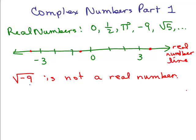But square root of negative 9 is not a real number. Square root of negative 9 is not on the real number line, because when you square a real number, it has to be positive. So the problem is: when you're figuring out what's the square root of negative 9, you're trying to find some number — let's call it x — what number squared is going to equal negative 9? And there's a problem: any real number, when you square it, will not be negative.